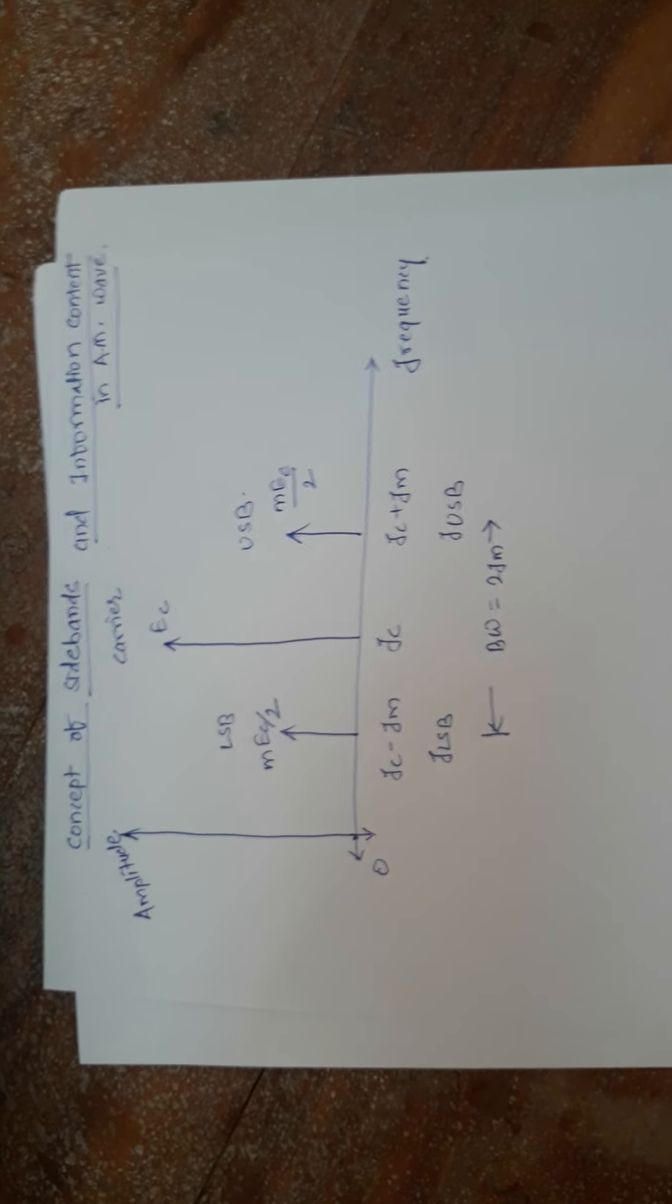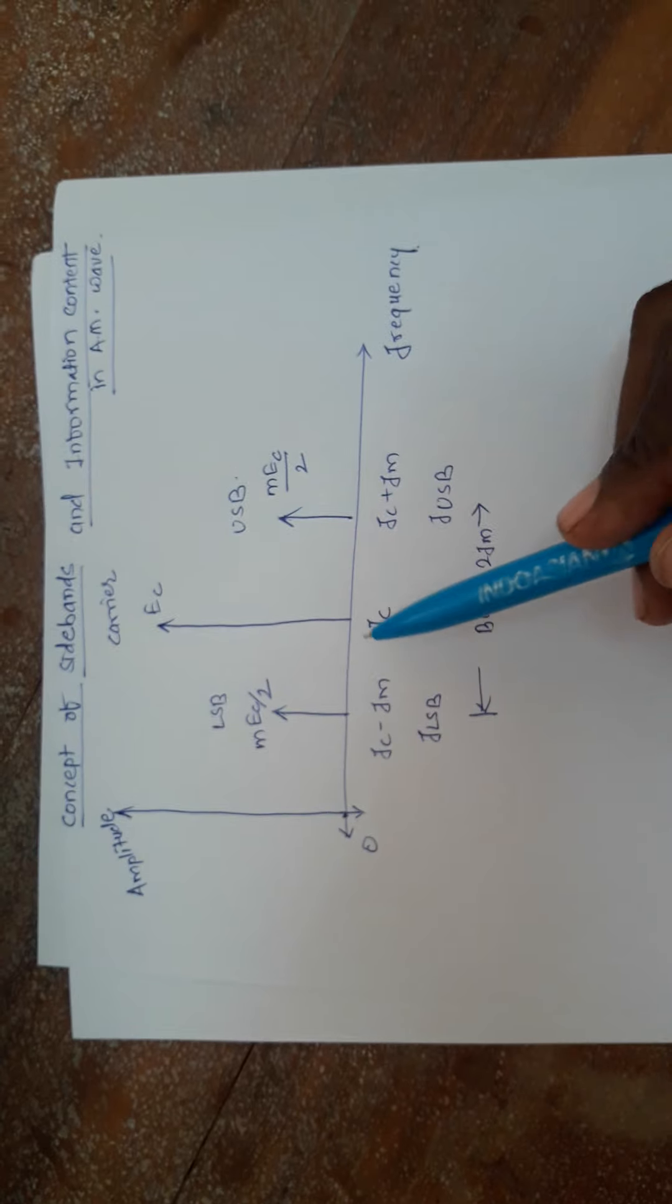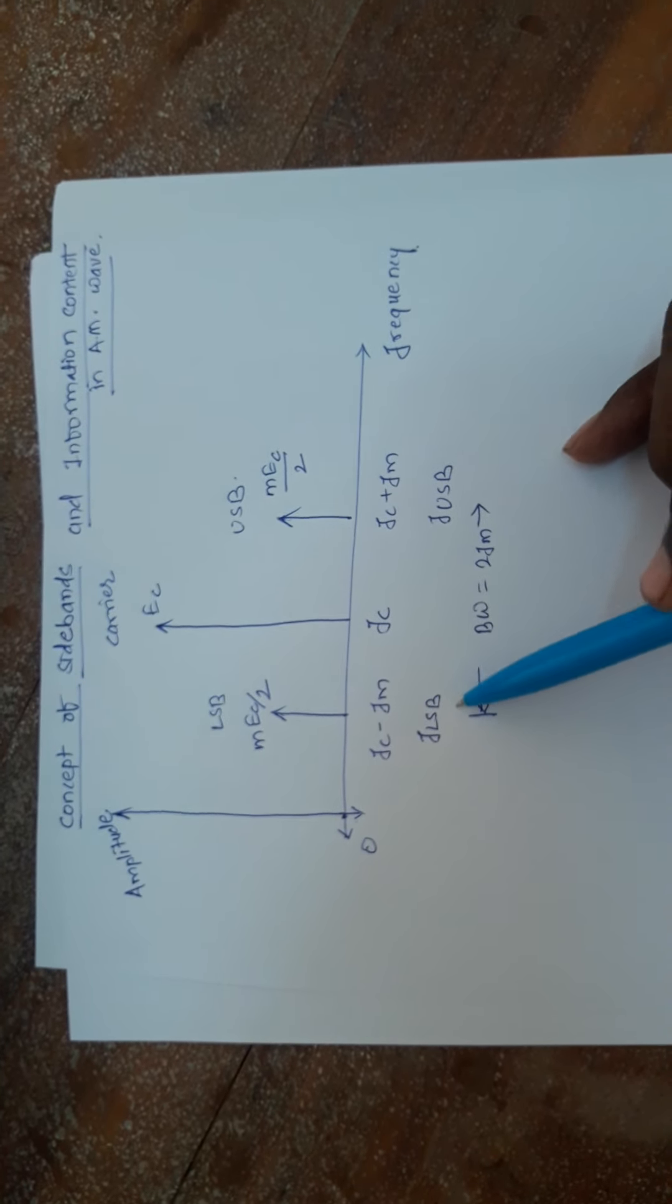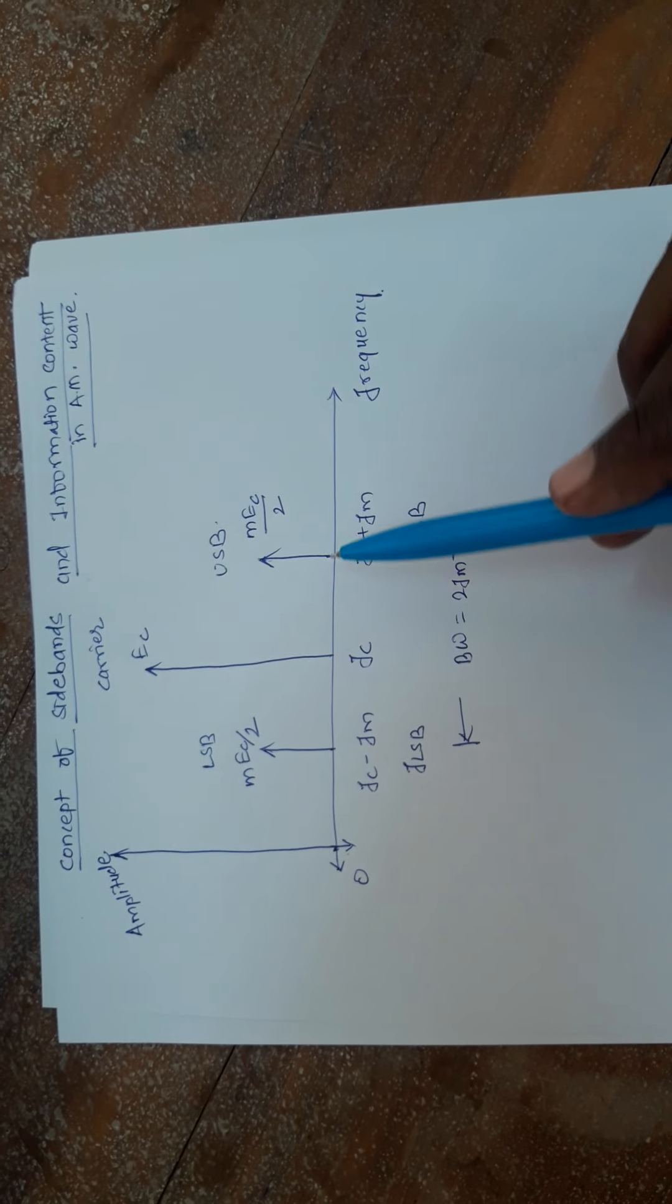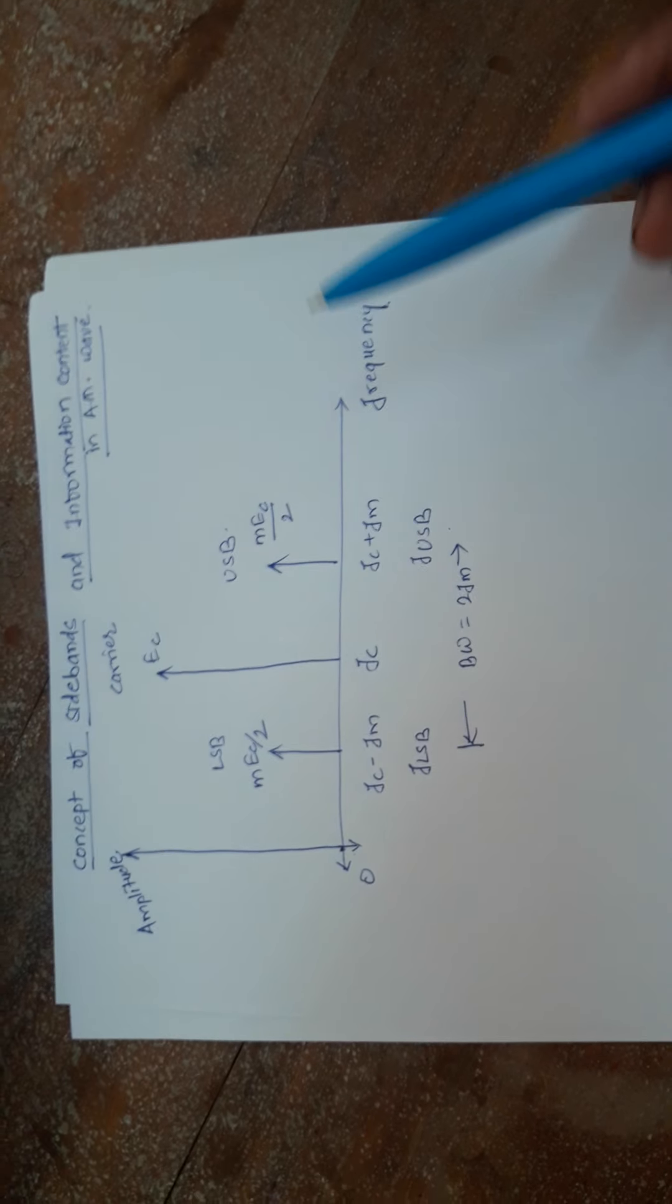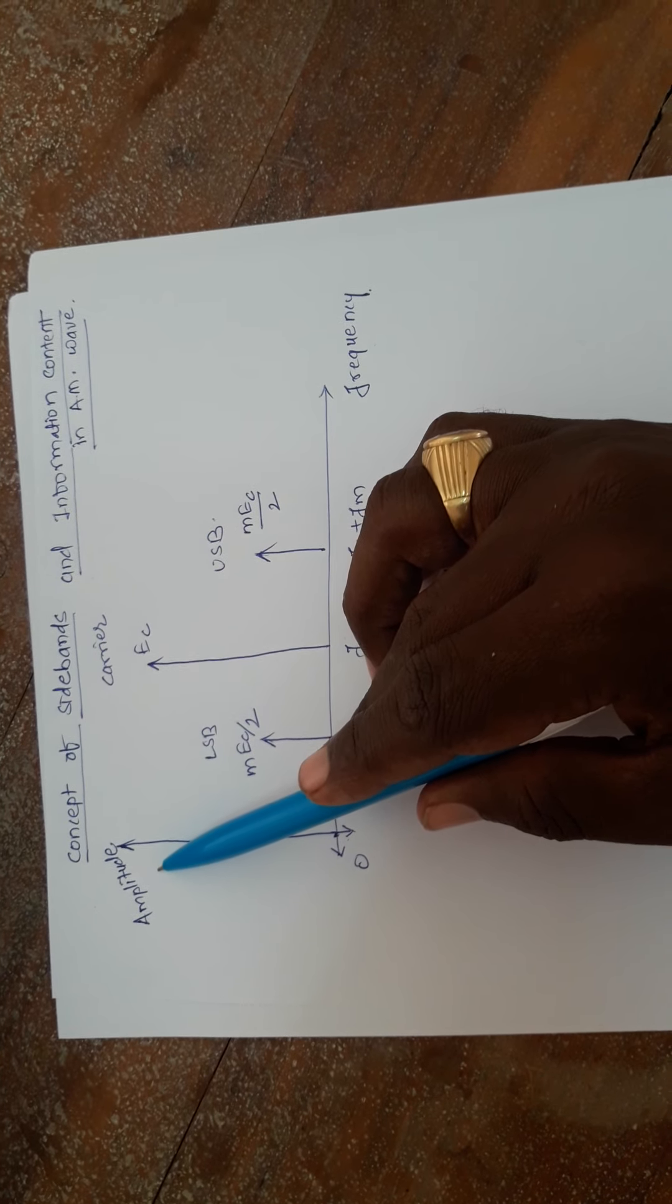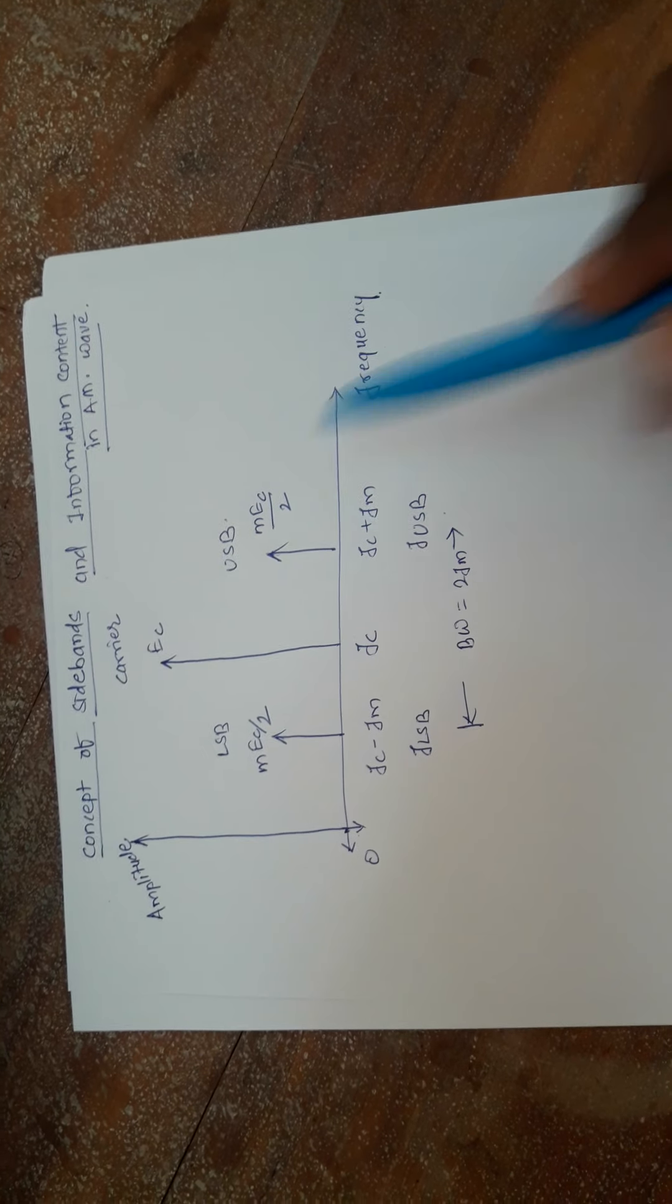An AM wave consists of three components: carrier component, the lower sideband component, and the upper sideband component. When we plot AM wave in frequency domain, means on x-axis there is frequency, on y-axis there is amplitude. What we observe, the three distinct components of AM wave.